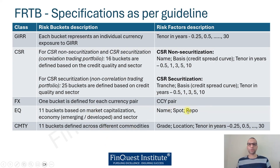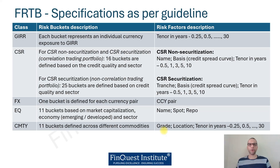The equity risk factor is the name, spot, and repo. For commodities, 11 buckets are defined across different commodity types. Risk factors are typically driven by the grade — for example, crude oil can come in varieties such as Brent crude or Dubai crude — as well as the location and the tenor in years, ranging from six months up to 30 years.